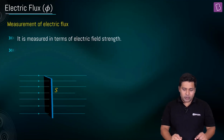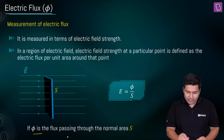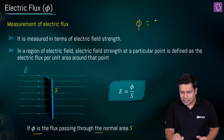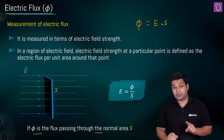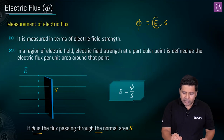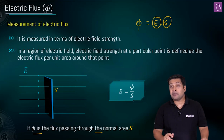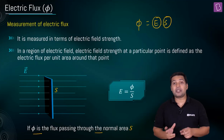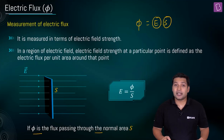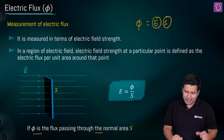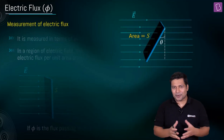If phi is the flux passing through the unit normal area, then we can write phi = E × S. But here comes the big question: electric field is a vector quantity and area is also a vector quantity. The product between two vectors is of two types — the scalar product (dot product) or the vector product (cross product). So which relationship exists here?